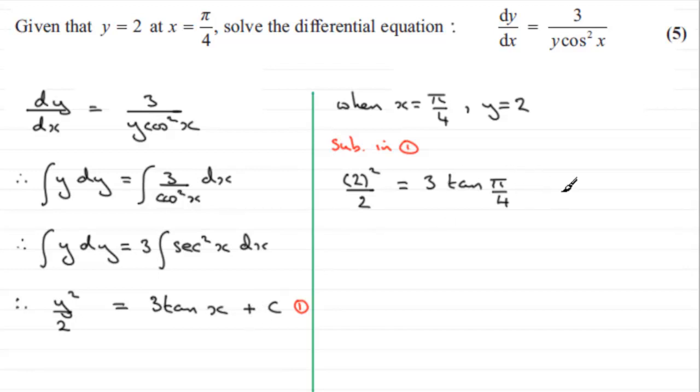So 3 tan π/4 plus C. Do we know what the tan of π/4 radians is? π/4 radians is the same as 45 degrees. Tan of 45 degrees is 1. So we've got 4 divided by 2, which is 2, equals 3 times 1, which is 3, plus C.